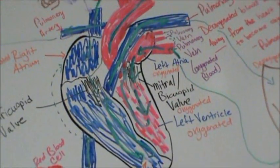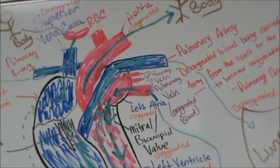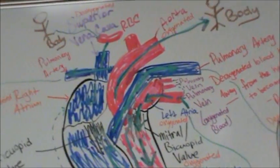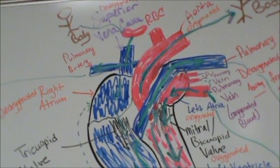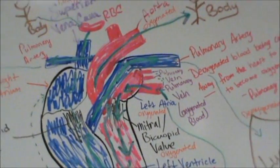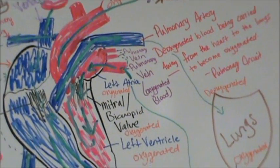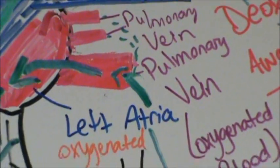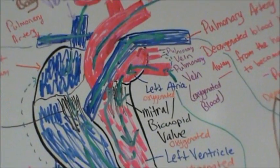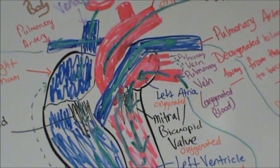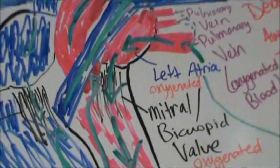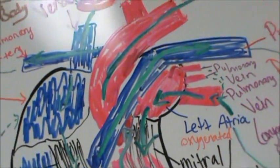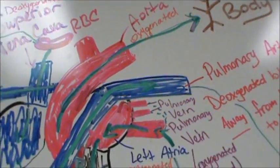The pulmonary artery starts right there and it branches off two different ways. And then you have your pulmonary vein — there are actually three there. And then you have your aorta, which technically starts right there in red and then goes all the way out.